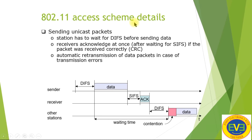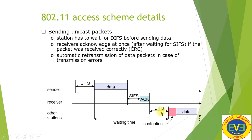802.11 access scheme details for sending unicast packets: the station must wait for DIFS before sending data. After DIFS, the receiver acknowledges once after waiting for SIFS, if the packet was received correctly (CRC check). Then automatic retransmission occurs if needed. The flow is: data sent → receiver waits SIFS → sends acknowledgement → sender waits DIFS again → sends next data. This cycle continues.